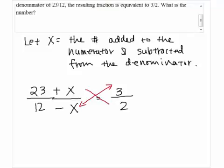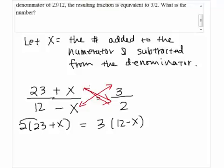To solve this equation, we're going to use cross multiplication since we have one fraction on the left and one fraction on the right. So 2 times (23 + X) equals 3 times (12 - X).